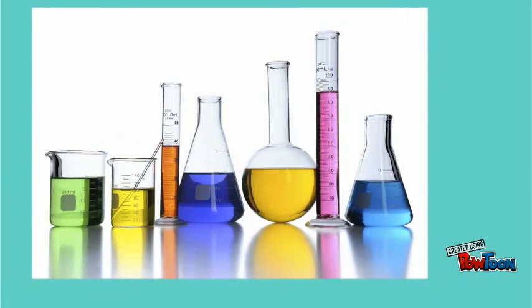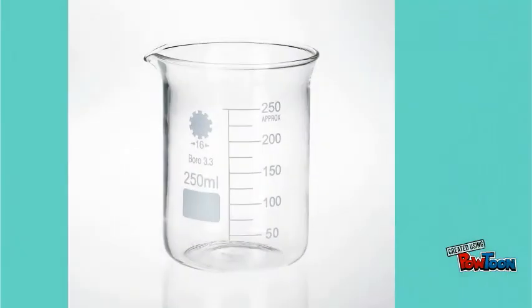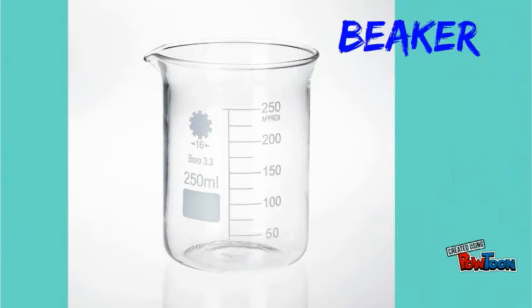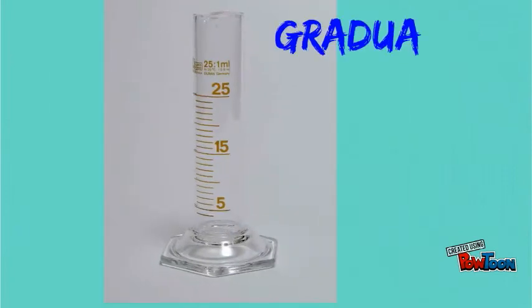In a lab situation we're going to be working with different glassware — beakers, graduated cylinders, and different types of flasks. When we're using those to measure something we have some choices. For example, if we're measuring some liquid, we could use a beaker or we could use what's called a graduated cylinder.